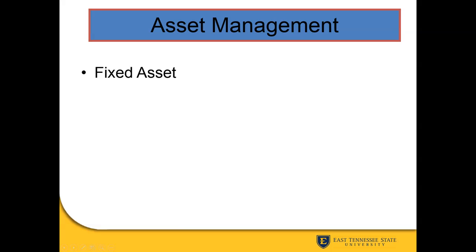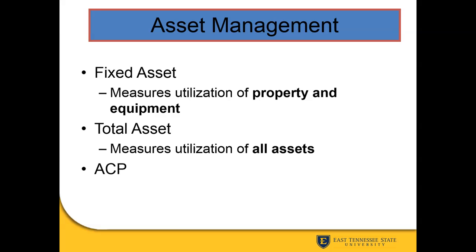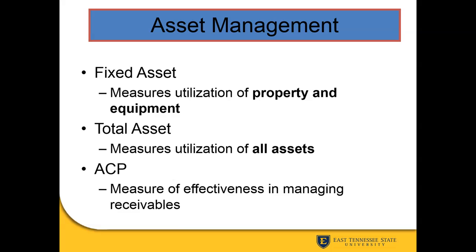As a review of asset management ratios: fixed asset ratios measure fixed items like property and equipment; total asset ratios cover utilization of all assets, both fixed and non-fixed; and accounts receivable measures how well we manage accounts owed to us.